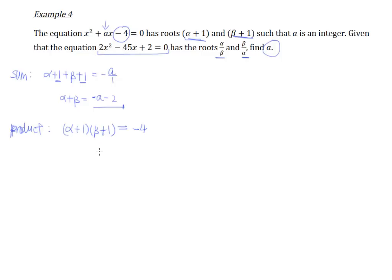And this product will be equal to -4/1, so simply -4, because the product of roots is equal to c/a and our c being -4 and a being positive 1. So if we were to do the expansion in this, we'll end up with αβ, which is α multiplied by β, α multiplied by 1 gives us 1α, and β multiplied by 1 gives us 1β, and 1 multiplied by 1 gives us 1, and that gives us -4.